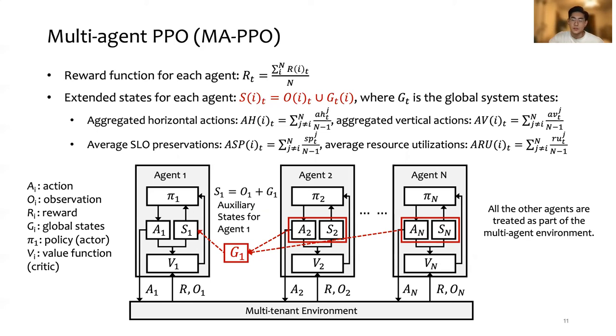The other variables are average SLO preservation and average resource utilization across all the other agents. By using aggregated and average values, MA-PPO is agnostic to the agent group size and the agent order so that incremental training is possible.